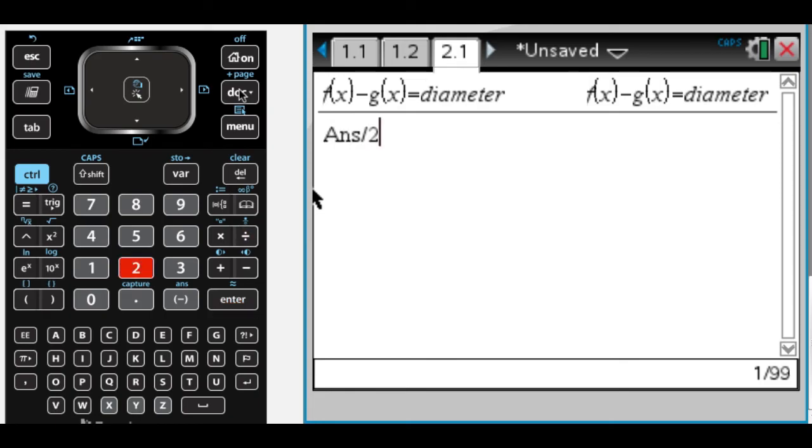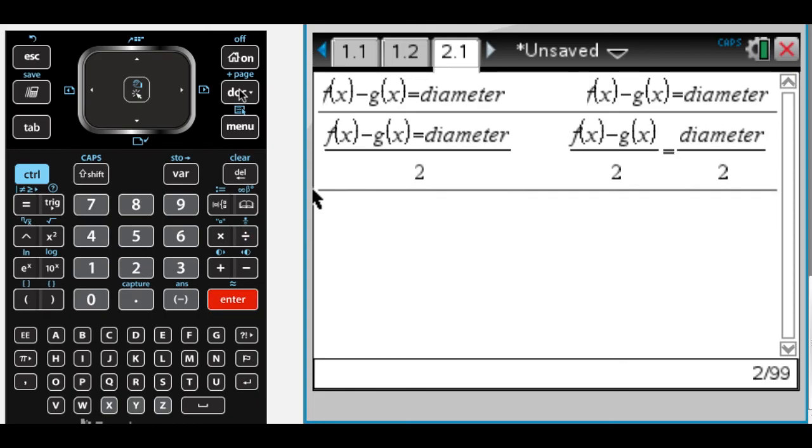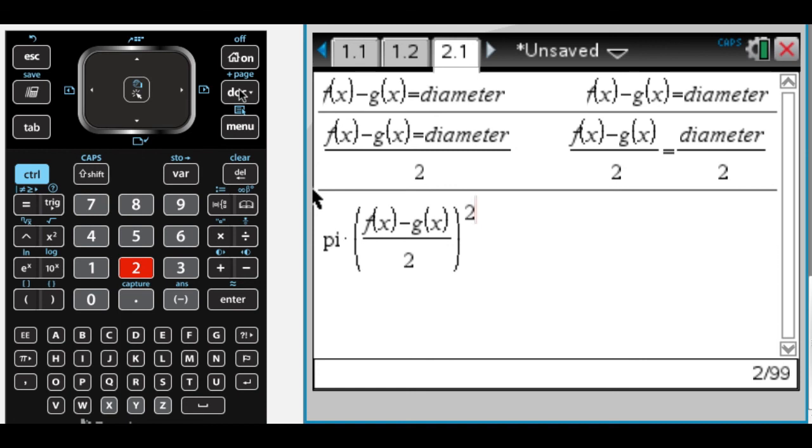And so the radius would be half of that. And what we want is, we want pi times the radius squared. So that's where we get F of x minus G of x squared. Right now we have over 4 if we expand that. But it's a semicircle, so I only want half of that. So I would have to divide that by 2.